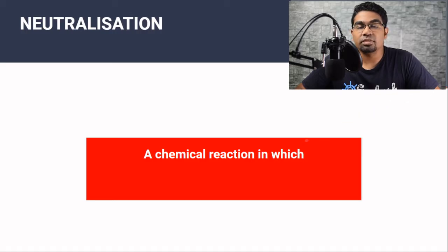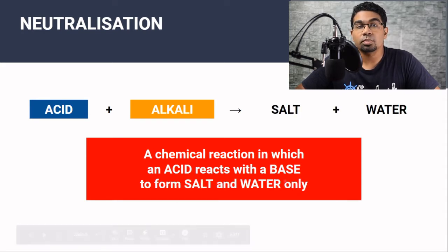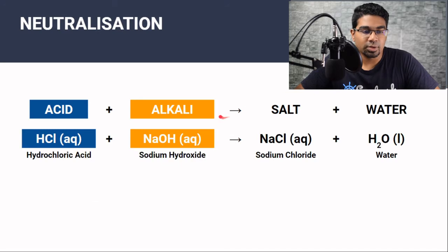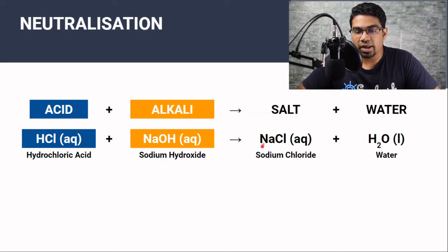First, let's go through the definition of neutralization. Neutralization is a chemical reaction in which an acid reacts with a base to form salt and water only. No other product should be formed. In this case, we're going to look at acid and alkali. Remember that alkali is just a soluble base. We have hydrochloric acid and sodium hydroxide, which is an alkali. It produces sodium chloride, which is salt, and water only. So we start with an acidic and basic substance and we end with neutral substances. Therefore, it is called neutralization.